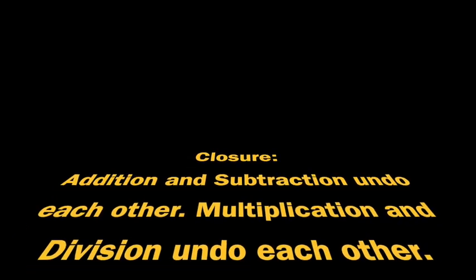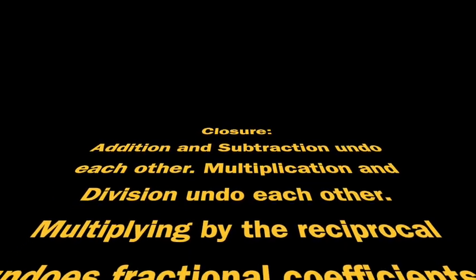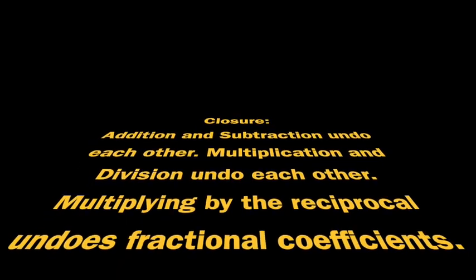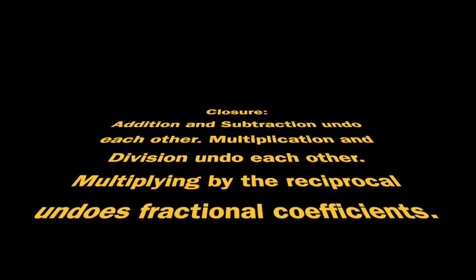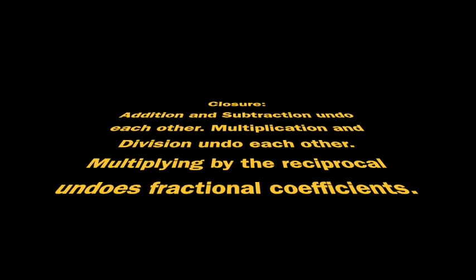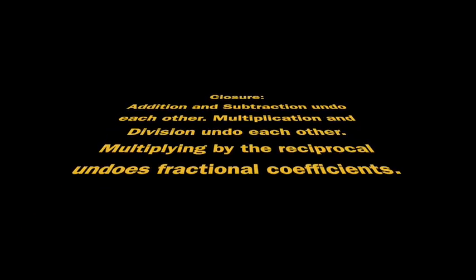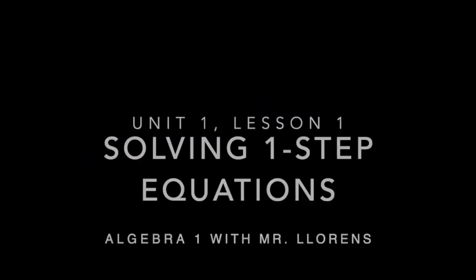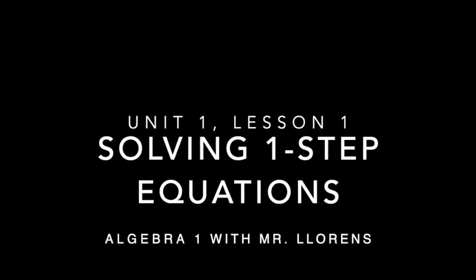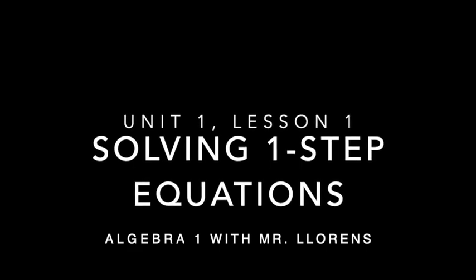So that brings us to the end of this lesson. This lesson was all about undoing. If you have multiplication or division, you can undo it with the other one. If you have multiplication, you can undo it with division, vice versa. Same thing with addition and subtraction. They can undo each other. And at the end of the lesson, we learned that if you have a fraction as the coefficient, so just x and a fraction, you can get rid of that fraction by multiplying by the reciprocal. If you have any other big takeaways, write them down now. Otherwise, see you next time.